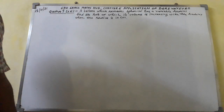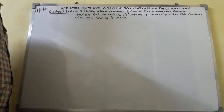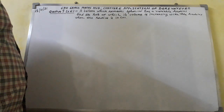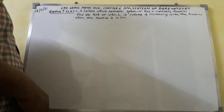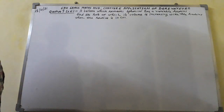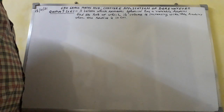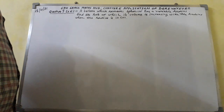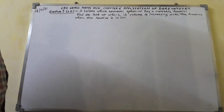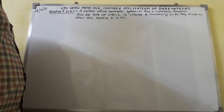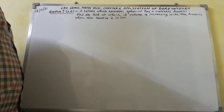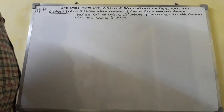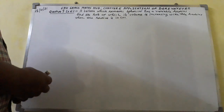I am from Gauras, Maheshabh. I shall explain question number 9, exercise 6.1 of NCERT Mathematics. A balloon which remains spherical has a variable radius. Find the rate at which its volume is increasing with the radius when the radius is 10 cm.